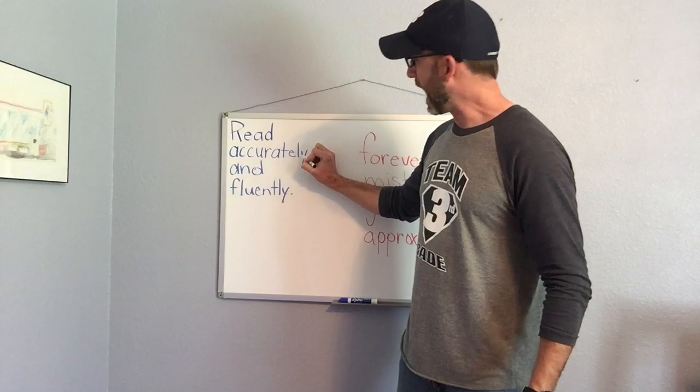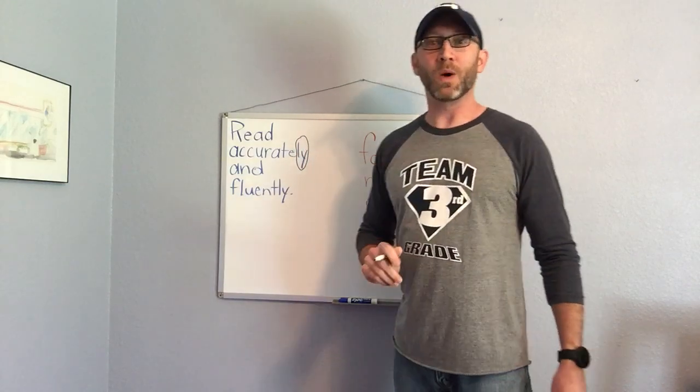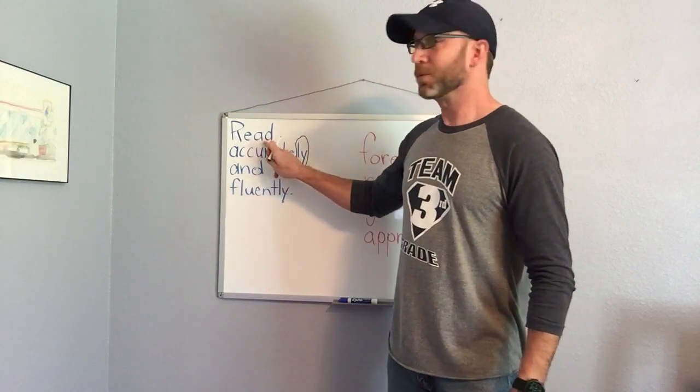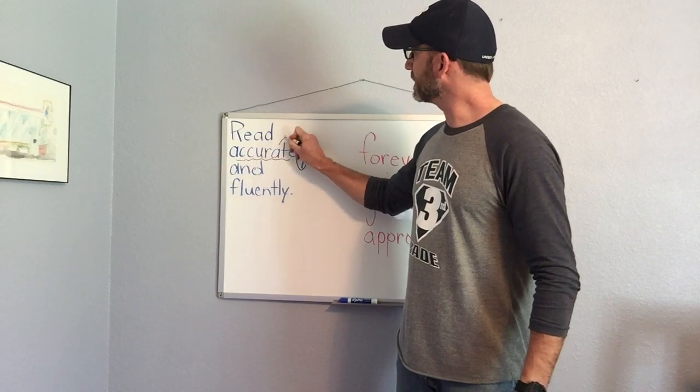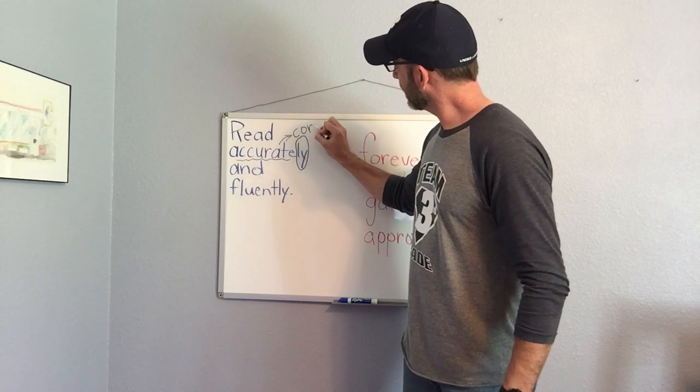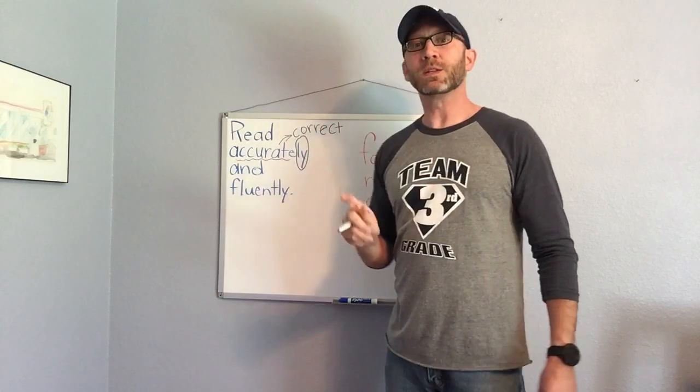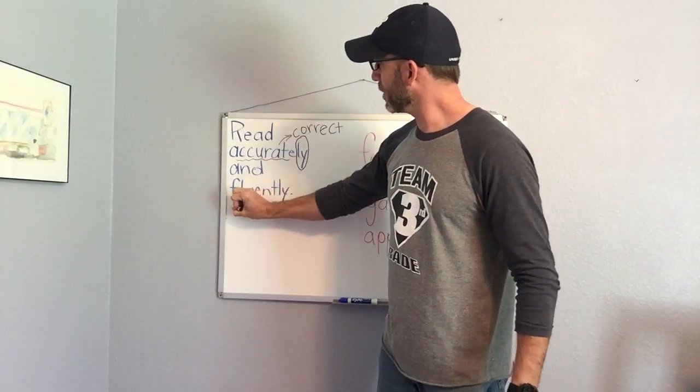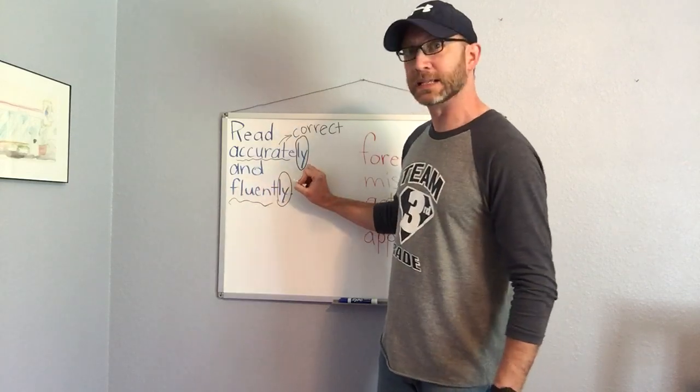Now it's important if you're going to do those things that you know exactly what they mean. If you look at this word accurately, we can circle the ly, that's a suffix that means in a way. So we're going to read in an accurate way. Accurate just means correct, that means we're going to read the words correctly, we're going to get them right.